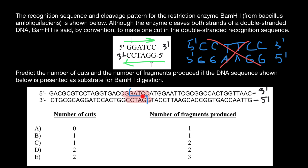When the restriction enzyme cuts each strand at that one recognition site, we are going to get two fragments. We don't need to check the other strand separately because the enzyme recognizes a palindromic sequence. The correct answer is C: one restriction enzyme recognition site, producing two fragments.